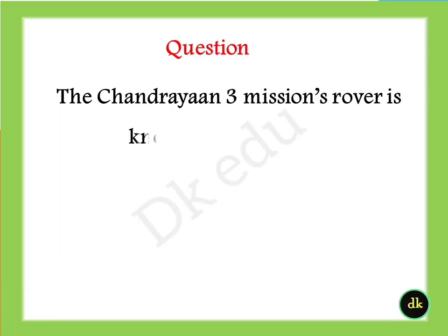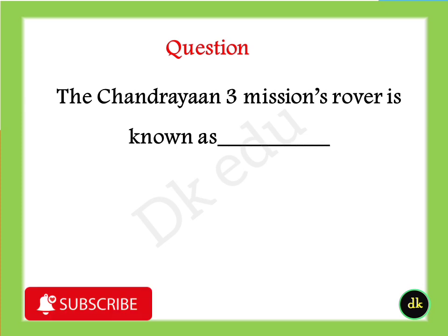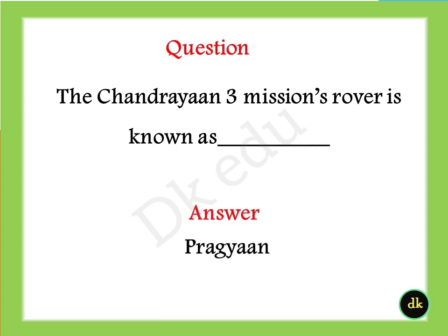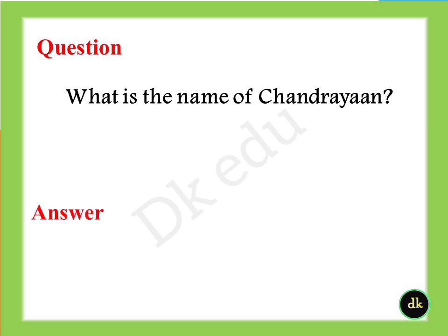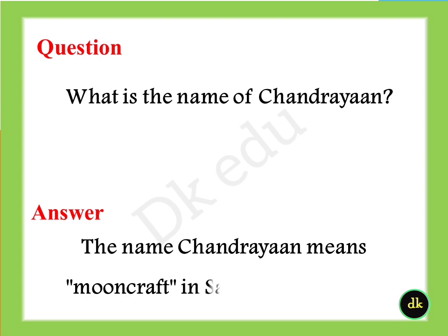The Chandrayaan 3 mission's rover is known as Pragyaan. The name Chandrayaan means moon craft in Sanskrit and Hindi.